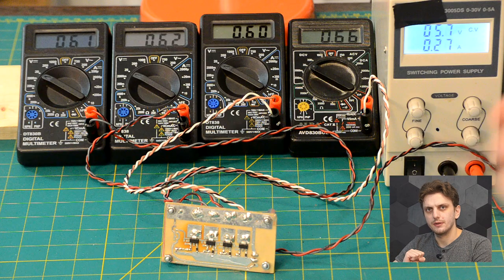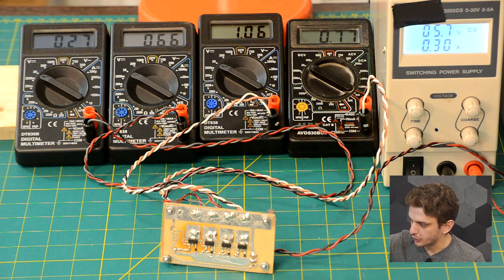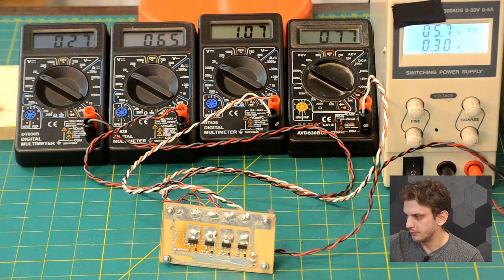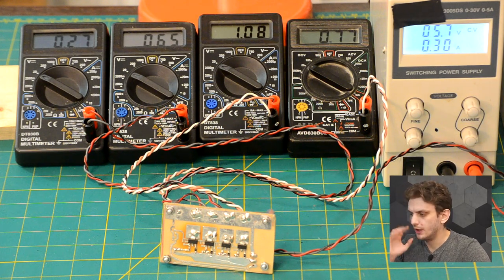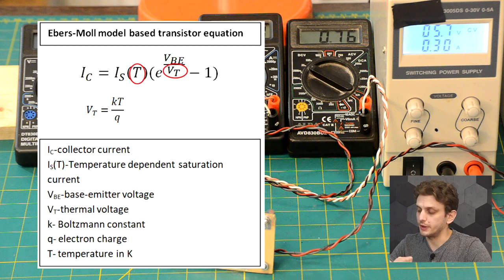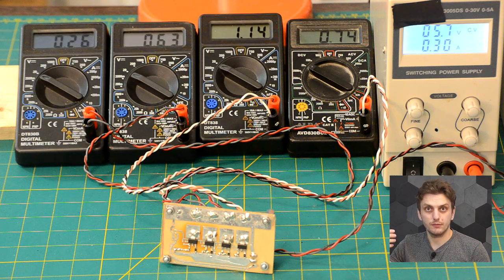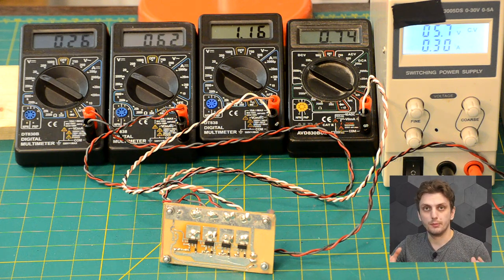Now another interesting thing happens. After a while, we can see that the currents start to spread out quite a lot — one transistor running at more than 100 milliamps, whereas one is running at only 27. Another factor that decides what current goes through the transistor is the temperature at which it's running. Based on the initial discrepancies between collector currents, the transistors heat up differently, and then the current starts changing, and then they heat up more. The transistors with the higher current heat up more, and we get into a positive feedback loop.